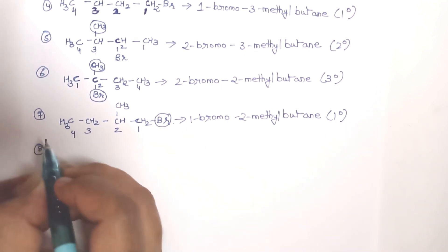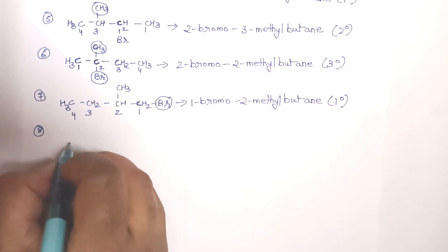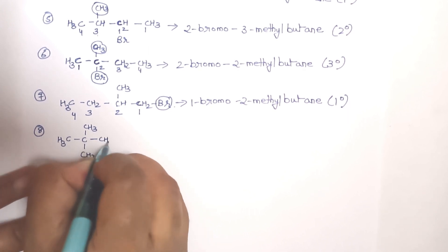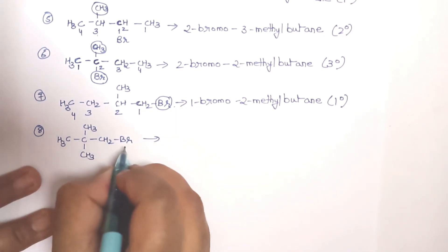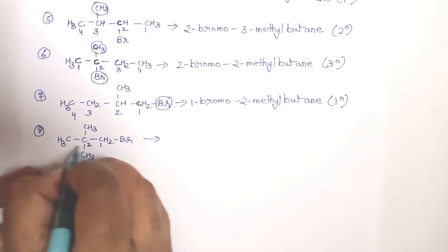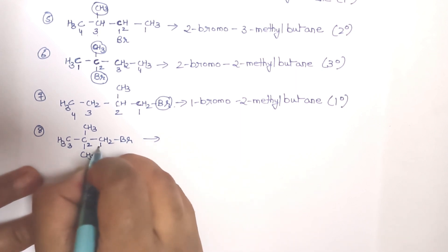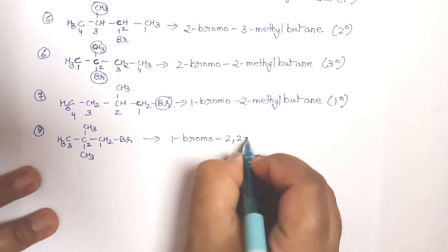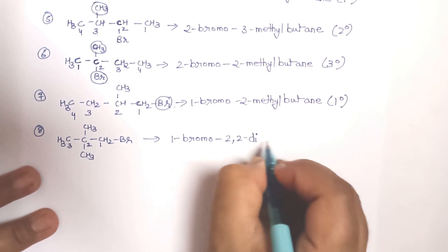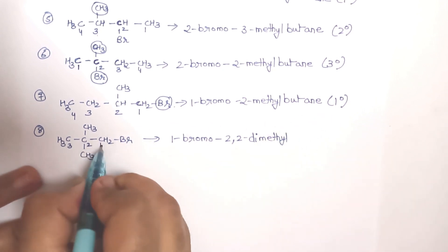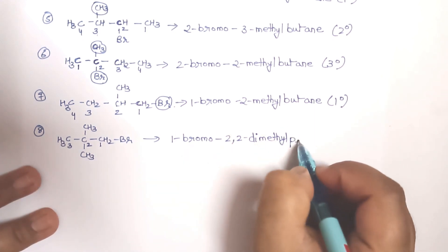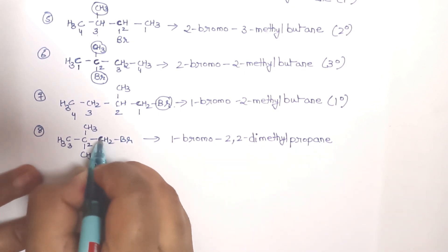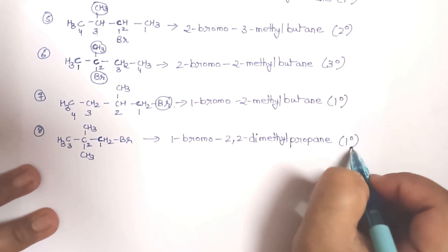For the eighth and last structure, two methyl groups are attached to the second carbon: CH3-C(CH3)2-CH2Br. Numbering from the bromine end: 1, 2, 3. Bromine is at carbon 1 — so 1-bromo; two methyl groups are at carbon 2 — so 2,2-dimethyl ('di' means two); 3 carbon atoms in the chain so 'prop'; all single bonds so 'ane'. The name is 1-bromo-2,2-dimethylpropane. This carbon is attached to only one other carbon, so it is a primary compound.